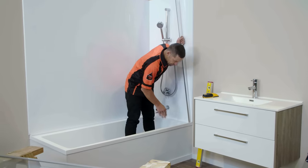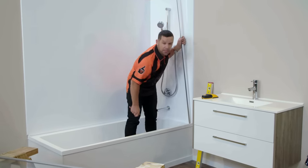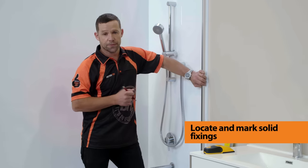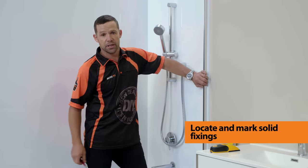In our particular situation, we've got a lip on the edge of the bath. So our fixed panel is just going to slot on the inside of that. What we need to do is see if we've got any solid fixing in the wall to attach our channel to.